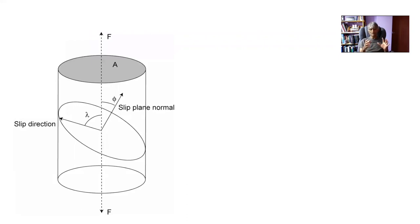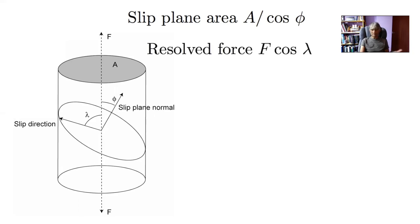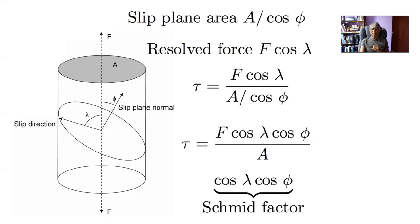We have a single crystal being deformed by applying a force along the vertical axis. The cross-sectional area of the crystal is A, lambda is the angle between the slip direction and the force axis, and phi is the angle between the slip normal and the force axis. The area of the slip plane is A divided by cos(phi), and the force resolved onto the slip direction is F·cos(lambda). The shear stress on the slip plane is therefore F·cos(lambda) divided by A/cos(phi), which rearranges to (F/A)·cos(lambda)·cos(phi). This is the Schmid factor.